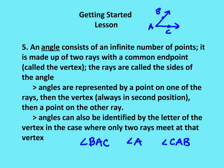Angles can also be identified by the letter of the vertex in the case where only two rays meet at the vertex. So I'm going to give you an example in just a second where we have more than two rays meeting at the same vertex. But in the case where I just have two rays meeting at the same vertex, you can use just the vertex to represent the angle. So in this case, I can rewrite the angle above as angle A.